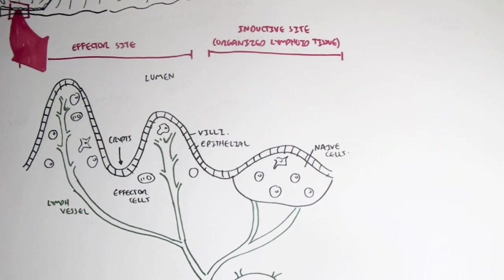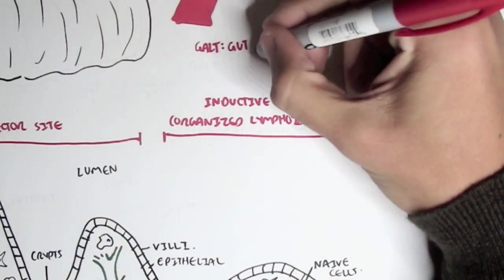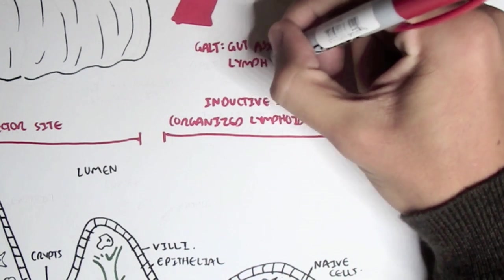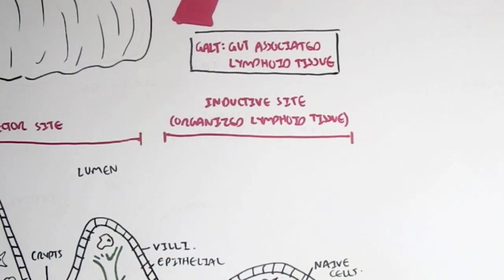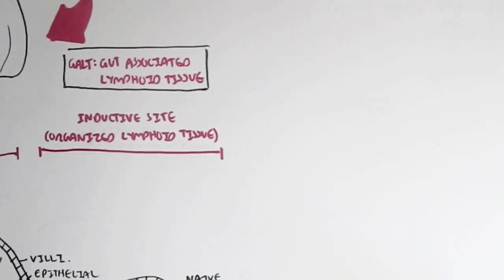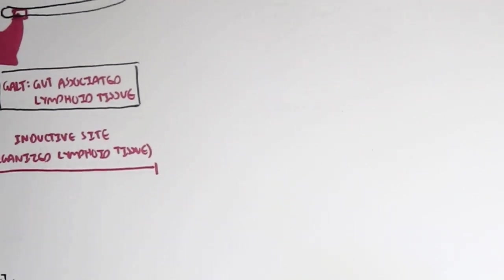The organized lymphoid tissue within the gut, because we're looking at the gut right now, make up what's called GALT, which stands for gut-associated lymphoid tissue. And this is essentially a branch of MALT, the mucosal-associated lymphoid tissue.